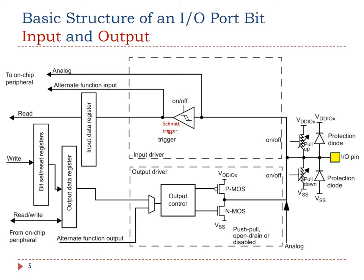Most GPIO ports have 16 pins. This diagram shows the standard structure of one GPIO pin. It includes the basic structure for both digital input and digital output. In this lecture, I will only focus on the digital input. I have discussed the digital output in the previous lecture video.